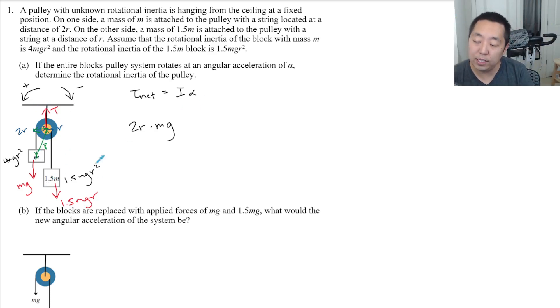And then similarly for this guy, we draw for the 1.5 MgR - if I were to draw my R vector to there, I only care about the portion that's perpendicular to the 1.5 Mg. And this would be a clockwise rotation. So I would say it's minus R times 1.5 Mg.